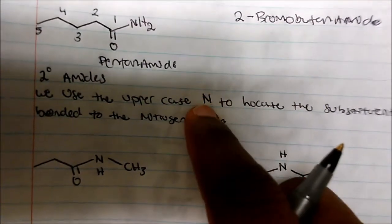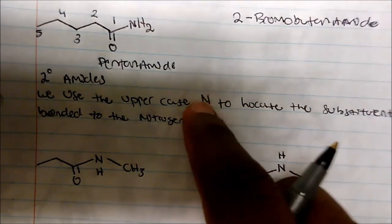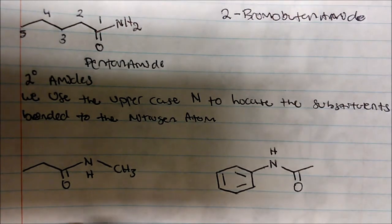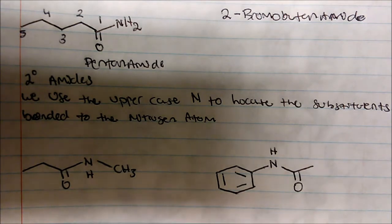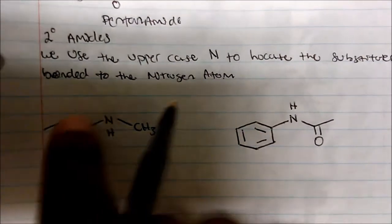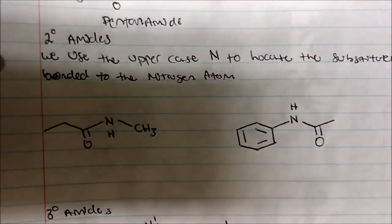With secondary amides, we use the uppercase letter N to locate substituents on the nitrogen atom. In secondary amides, there is only one hydrogen on the nitrogen. Let's look at some examples.